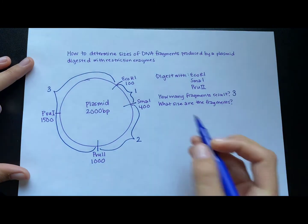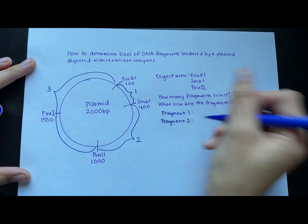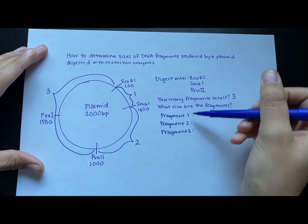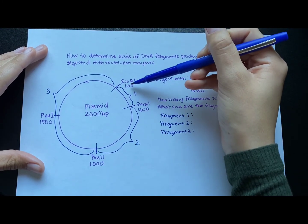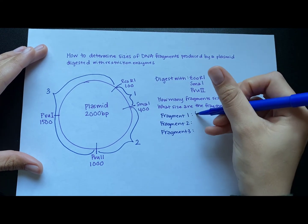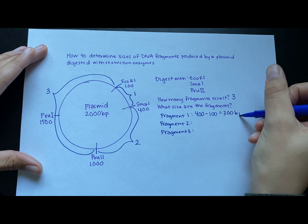So there's three fragments that result. So now that we know how many fragments there are, I'm going to just write them down so that we can keep them separate. And now we want to figure out the size. So to find the size of fragment one, you want to find the difference in base pairs between these two sites. So the difference between these two numbers will be 400 minus 100 gives you a 300 base pair fragment.